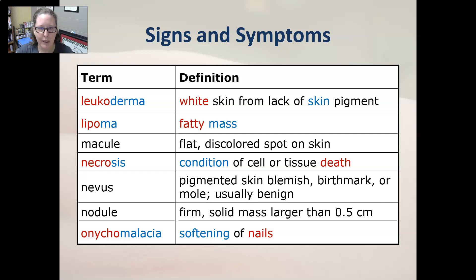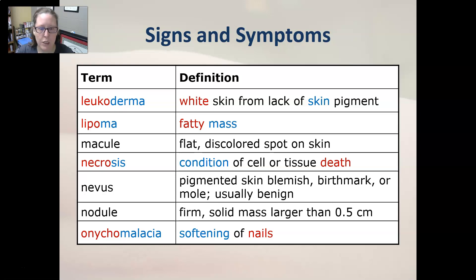If you've lost the ability to produce melanin in a certain area, you have leucoderma. Lipoma is a fatty mass. A macule is a flat discolored spot on the skin — a freckle is a good example of a macule.